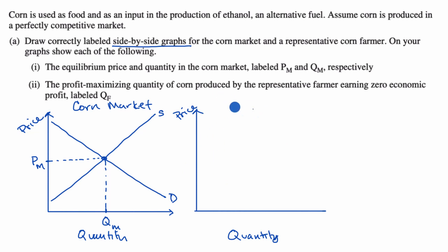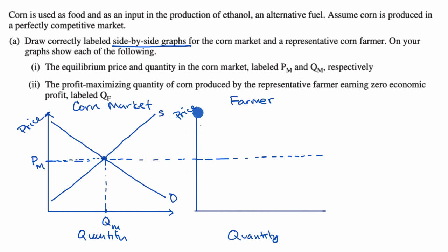Now this graph over here, we are going to draw the farmer's firm. The farmer is going to be a price taker, so whatever the equilibrium price in the market, that is going to be the price the farmer has to take. I'll draw a dotted line — assuming the scales are the same. The profit maximizing quantity of corn produced by the representative farmer is earning zero economic profit, so the average total cost has to equal the price at that quantity.